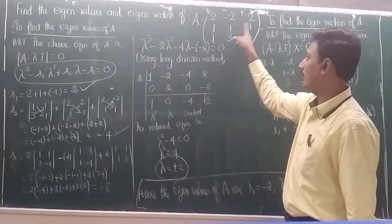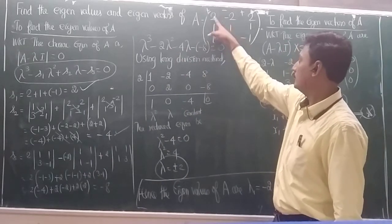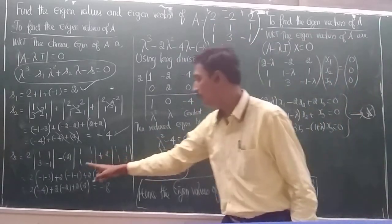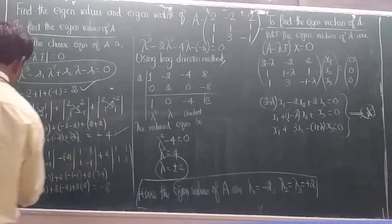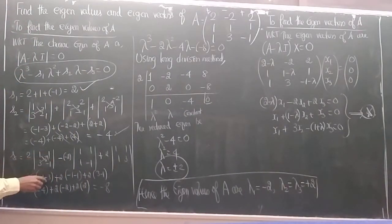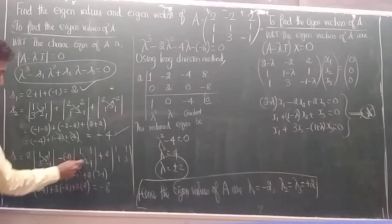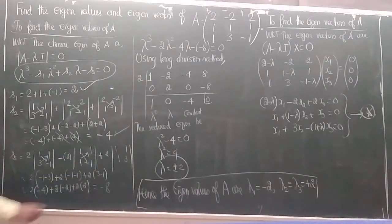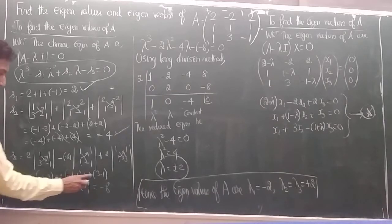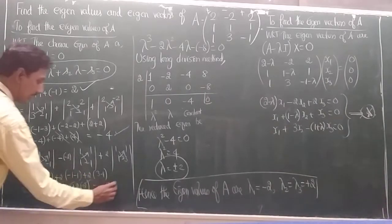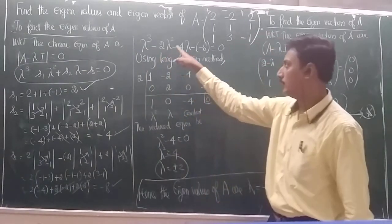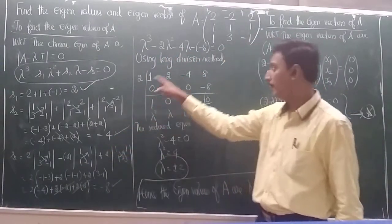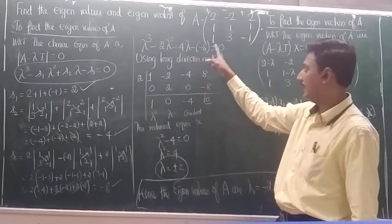Continuing the S₂ and S₃ calculations: the minors evaluate to give S₂ = −4. For S₃, computing the determinant gives −8. Substituting into the polynomial: λ³ − 2λ² − 4λ + 8 = 0.